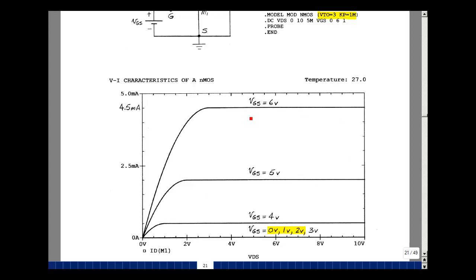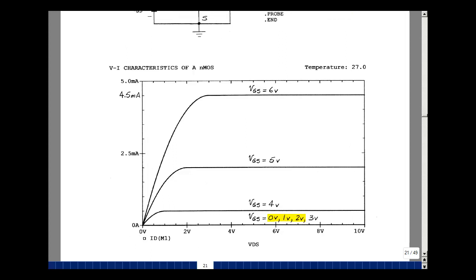Here's zero volts, one volt, two volts, three volts where our threshold is, then four, five, and six. The value at six volts is four and a half milliamps. That's exactly what we had in our sketches previously. I should point out that the graph here is a default variable, VDS. And I'm plotting the drain current in transistor M1.